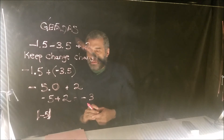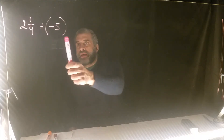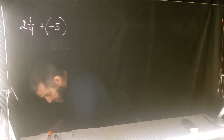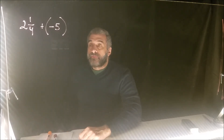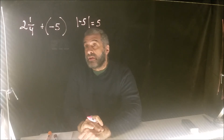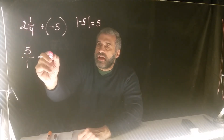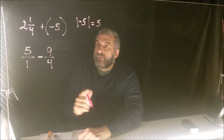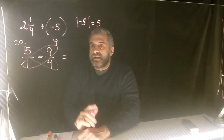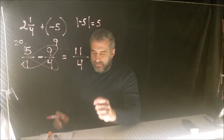Next example: 2 and a quarter plus negative 5. Find the one with the highest absolute value — that's negative 5, with absolute value 5. So the answer will be negative. We subtract: 5 over 1 minus 2 and a quarter. Converting: 5 over 1 gives 20 fourths and 2¼ gives 9 fourths. So 20 minus 9 over 4 gives 11 fourths.